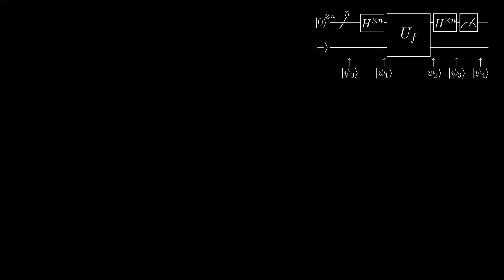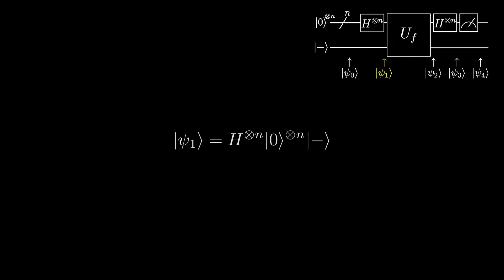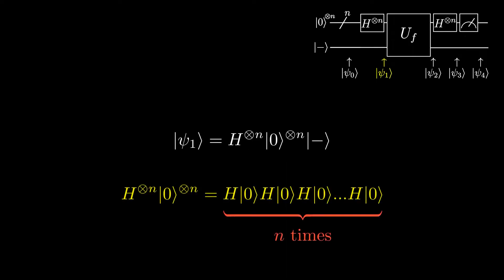Let's go through the algorithm. At ψ₀, we have n zeros and a minus state. Then at ψ₁, we apply a Hadamard gate to each of the n zeros, giving us this state. Let's quickly derive an identity that we frequently use when applying Hadamards to a register of zeros.